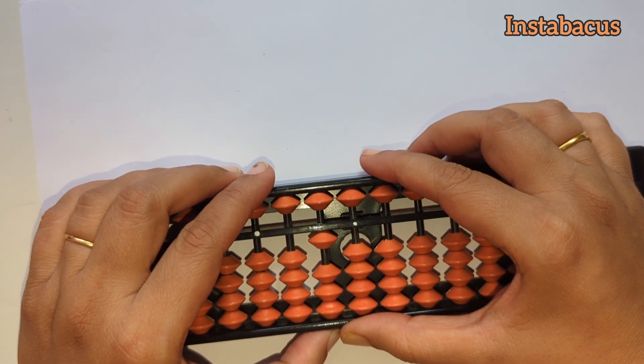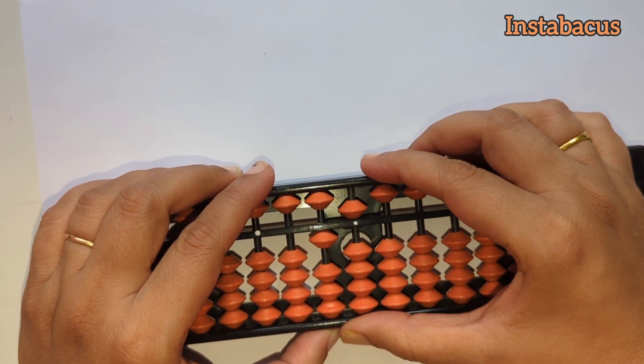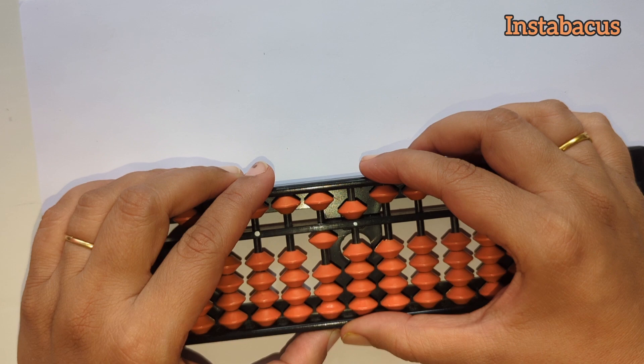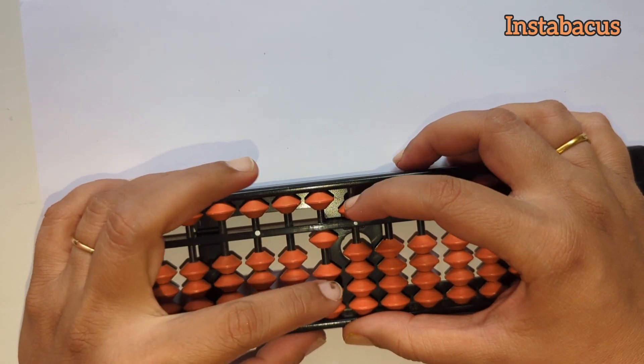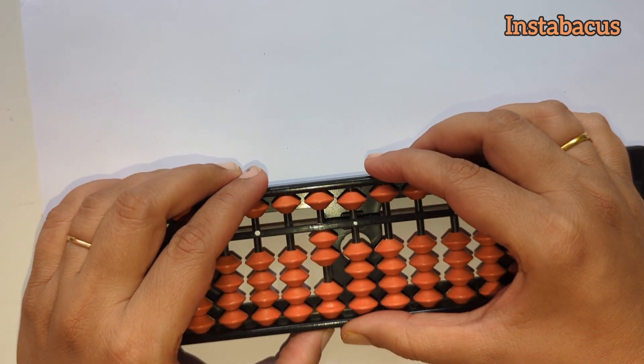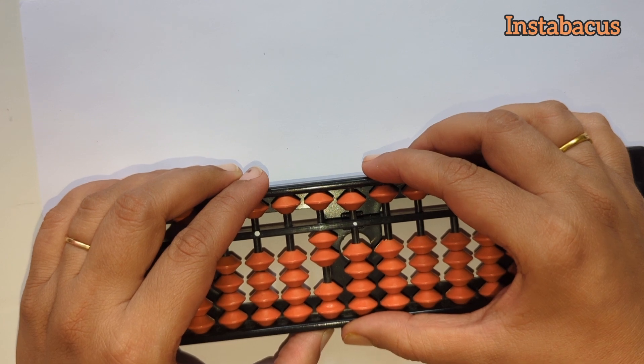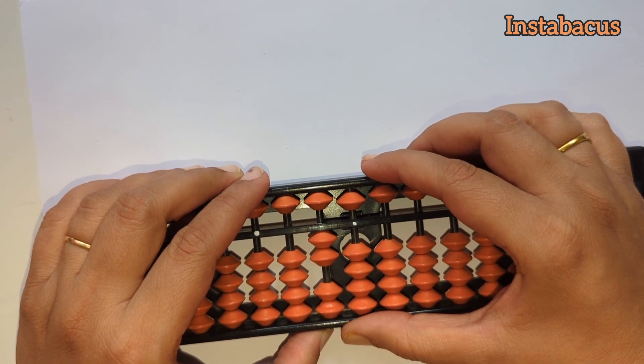So it is ten. Again to add five, we will add five like this over here, now it becomes fifteen. Plus five becomes twenty in a very similar way, and we can keep adding it like this exactly in the same manner.